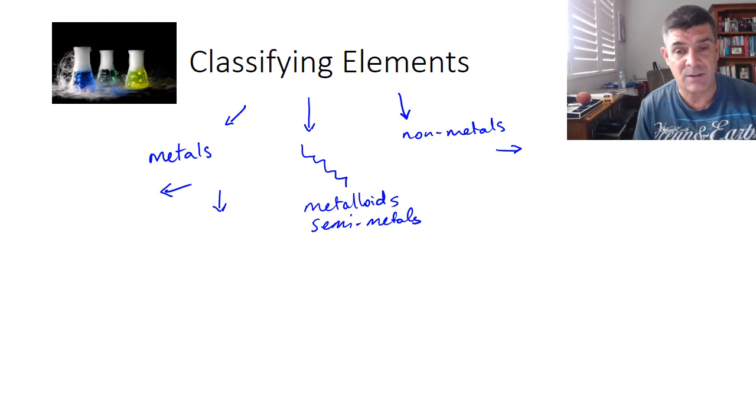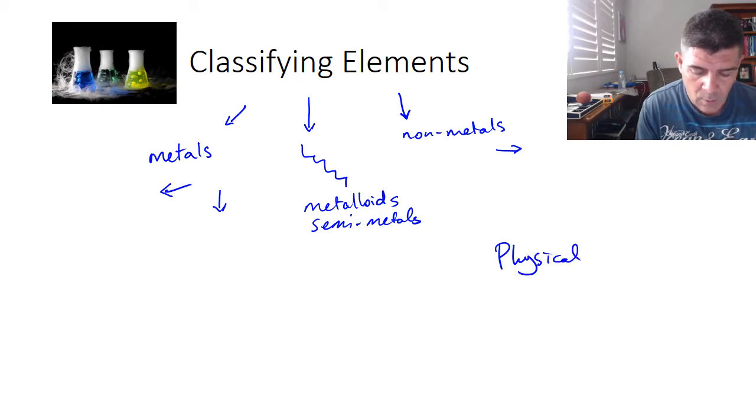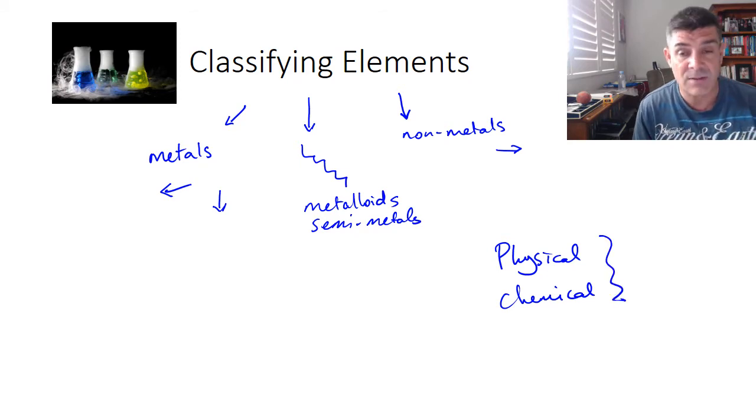So that's the groupings but why are they like that? Well there's a couple of reasons for them and mainly those reasons fall into one of two categories. Either their physical properties or their chemical properties. And most of the time when we start to analyse the different types of properties that we see for each of these different groups, we find that there's some consistency around them.